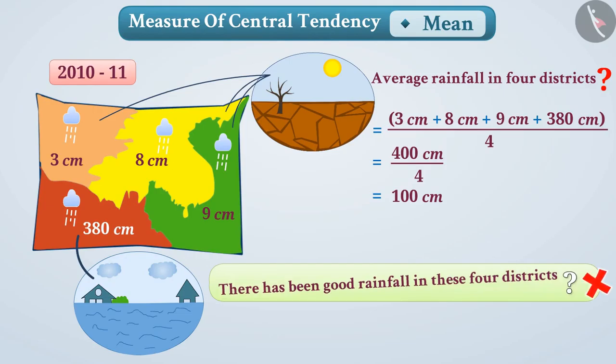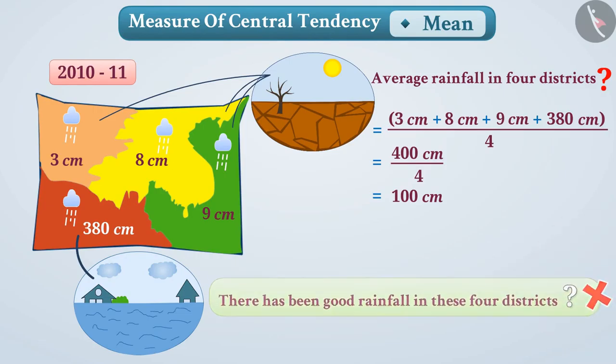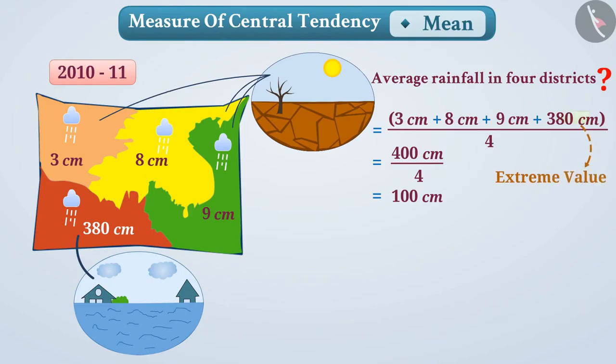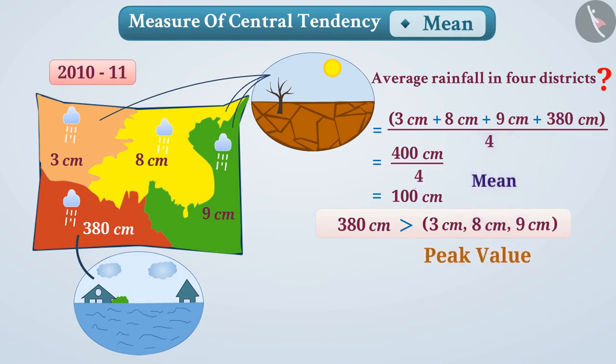The extreme value here is 380 cm, which is much larger than the other observations. It has the most effect on the mean. Similarly, peak values have greater effect on the mean.